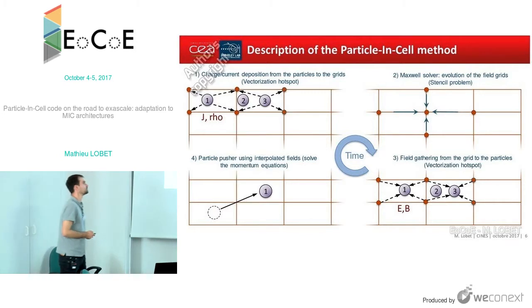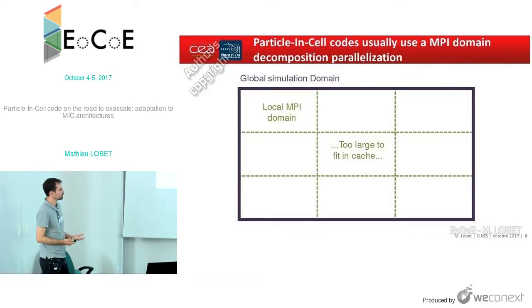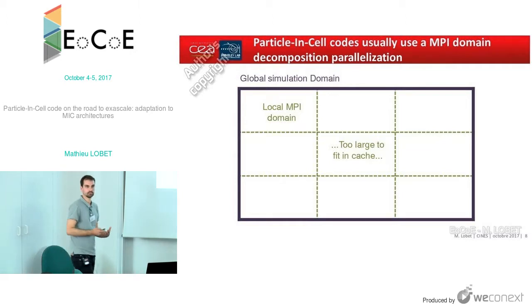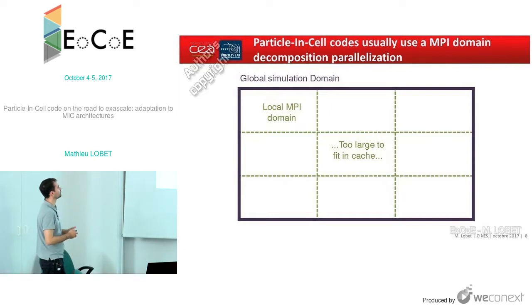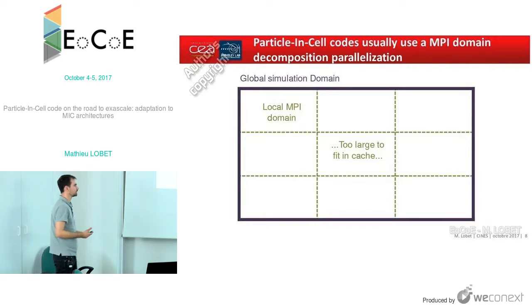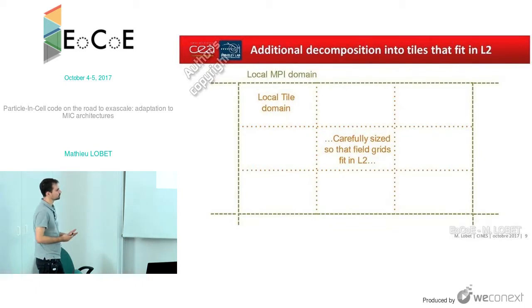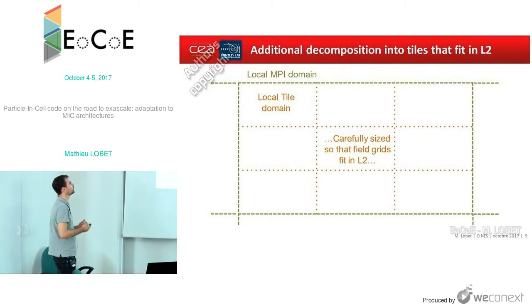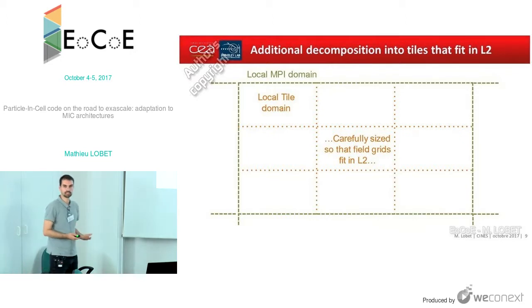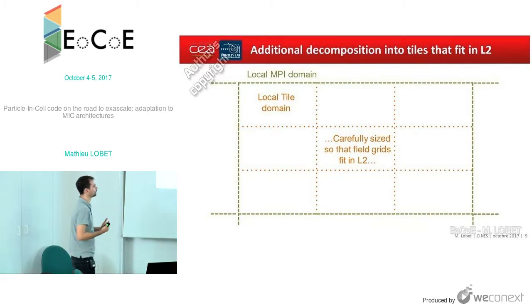I would like to switch to some optimization examples. Usually in PIC codes we use a very simple domain decomposition. Each domain is handled by an MPI rank, an MPI process. But usually these domains are very large and cannot fit in cache, even in L3. So what we did first to improve our PIC codes is to decompose again this large domain into smaller blocks that we call tiles. The size of the tiles is carefully chosen to fit in the L2, particularly on KNL, because we want to optimize our code on KNL.